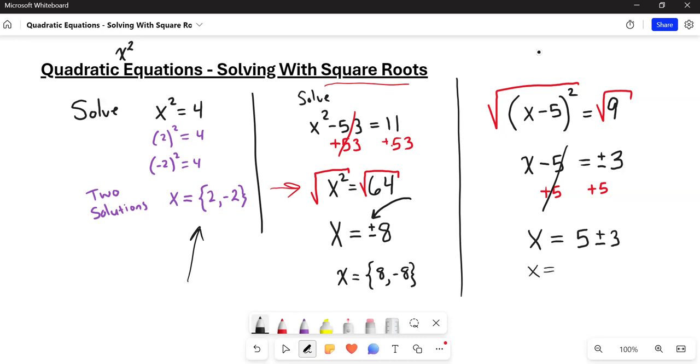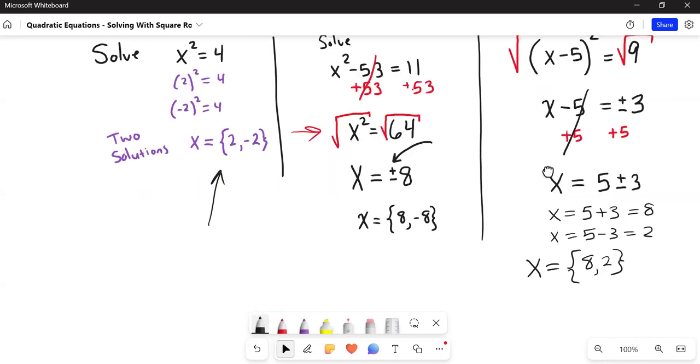So you get two solutions. You get x is equal to 5 plus 3, that will of course give us 8. And the other solution is x is equal to 5 minus 3, and that will give us 2. So our two solutions in this problem are either 8 or 2. And maybe you can see from this problem that we don't always just get a plus or minus version of the same number. It can actually be two different numbers. Still, we're getting two solutions.